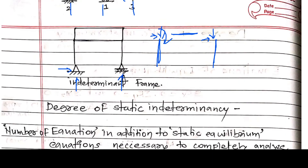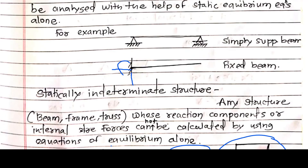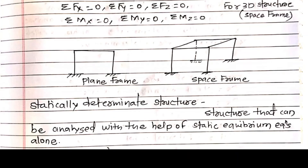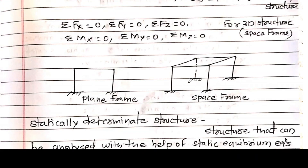This is all about the degree of static indeterminacy for beams. In the next lecture we will see the frame part — how to calculate the degree of static indeterminacy for frames. Please practice some examples: draw beams with different types of supports, different types and numbers of internal hinges and links, and calculate DSE as well as DSI.